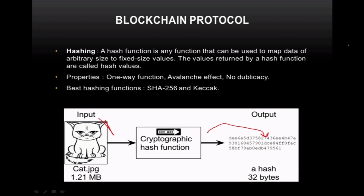In this image, there is an input cat.jpg containing a cat's picture. It is first converted into binary code, then put into the cryptographic hash function, which gives an output hash of 32 bytes or 256 bits.